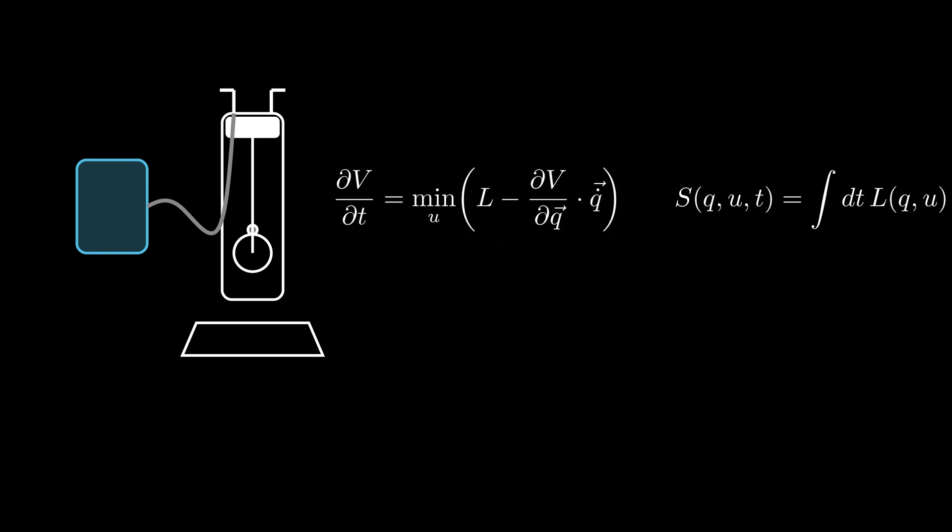To move another step toward reinforcement learning, we need to discretize the time derivative on the left-hand side of the Hamilton-Jacobi-Bellman equation and then multiply both sides by the time interval, delta T.